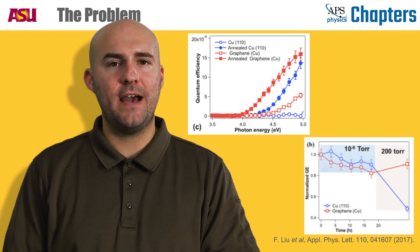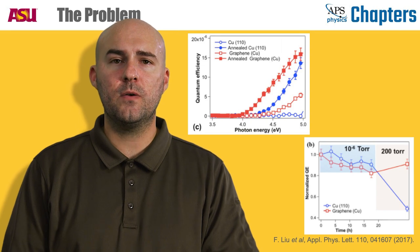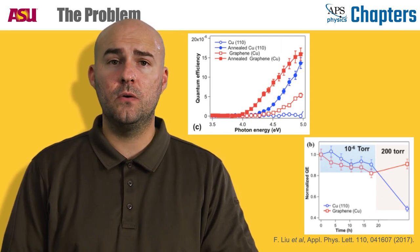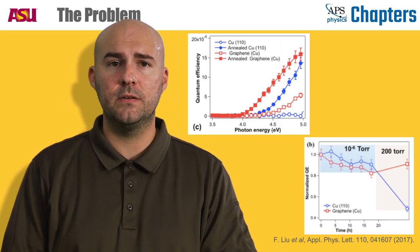I mentioned previously that after the photocathode is used for a long time, the quantum efficiency decreases significantly and the photocathode can no longer be used to produce the desired electron beam.